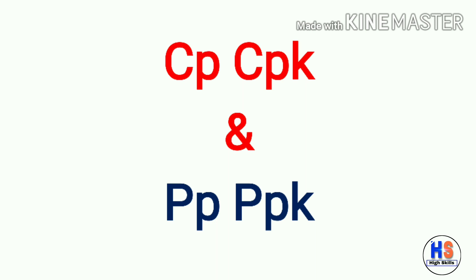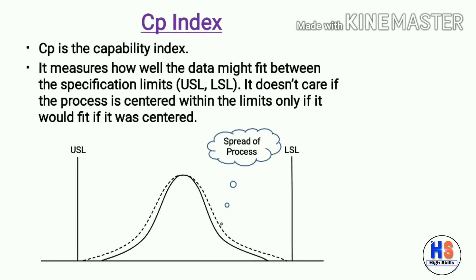In the concept of SPC there are some important indexes: CP, CPK, PP, and PPK. The CP index is the capability index — it measures how well the data might fit between the specification limits, which are USL and LSL. It doesn't care if the process is centered within the limits, only if it would fit if it were centered.